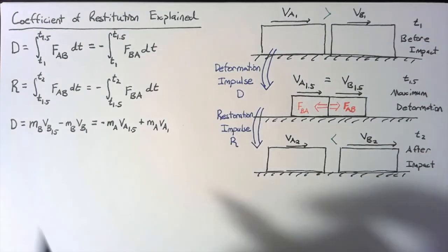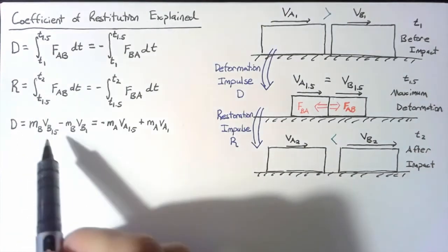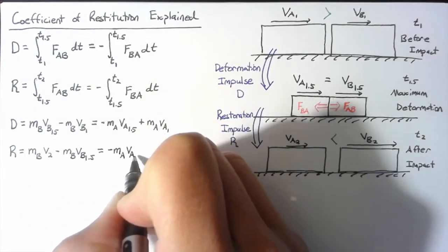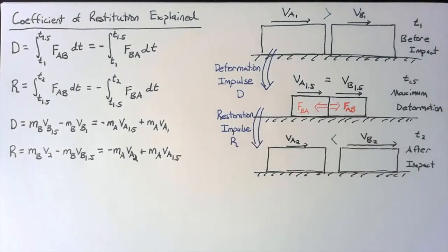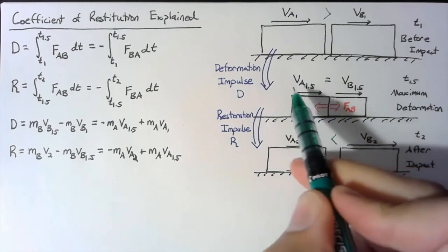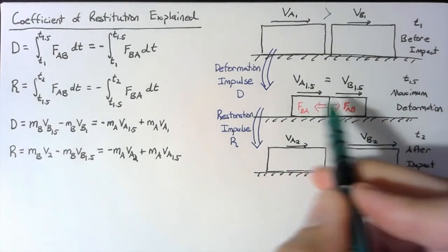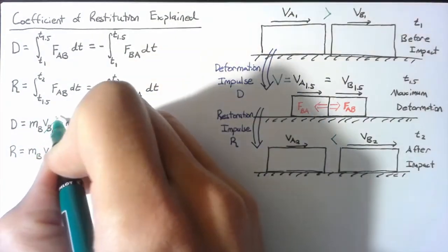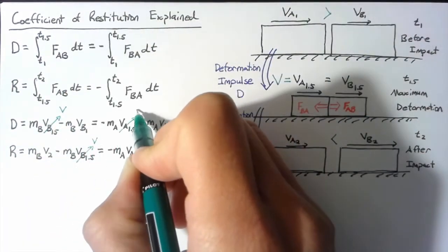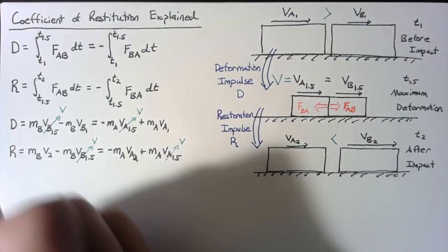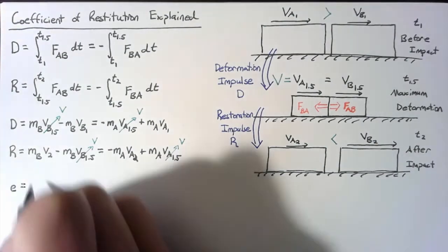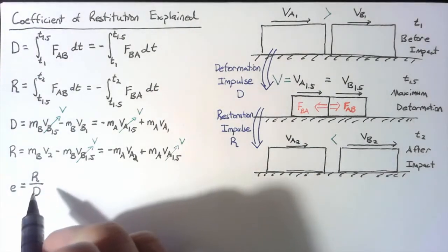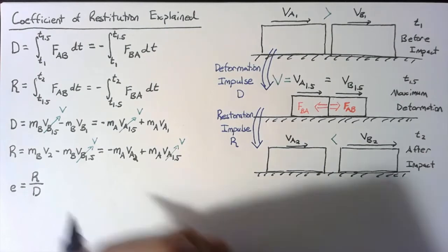We can write the same equations for the restoration impulse, replacing 1.5 with 2 and 1 with 1.5. Since the velocities at time 1.5 are exactly the same for both objects, I'll define a single shared velocity V to replace those four terms. The coefficient of restitution is simply the ratio of the restoration impulse to the deformation impulse — R divided by D. I want to show that this is equivalent to the definition used in previous videos, so I'll write this out for both block B and block A.